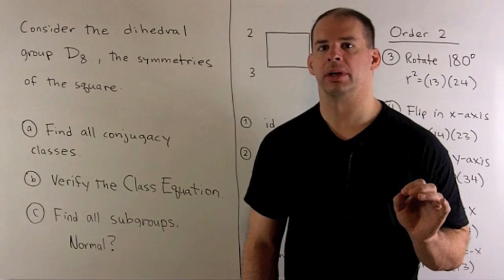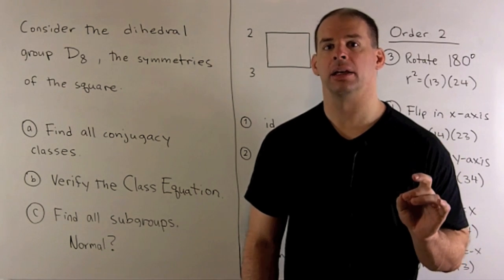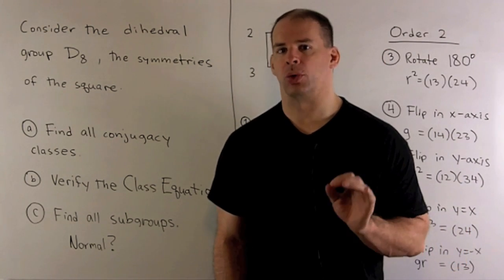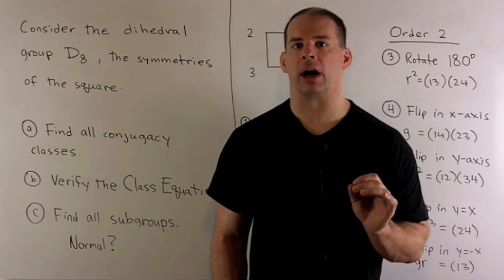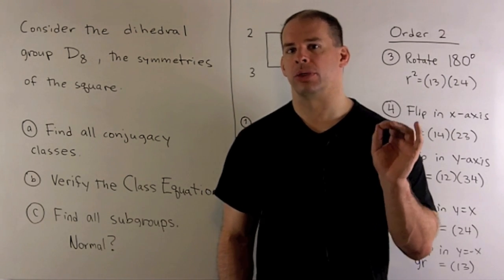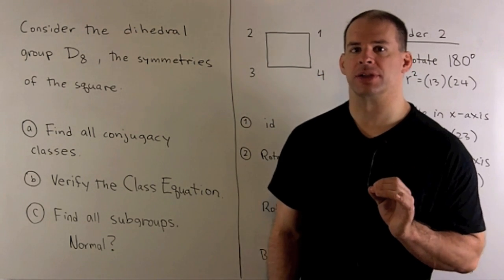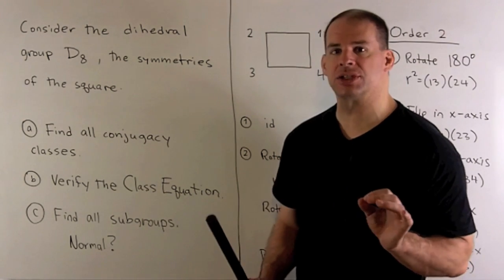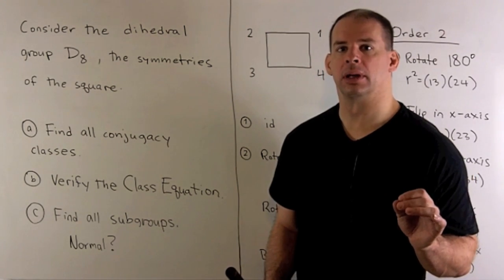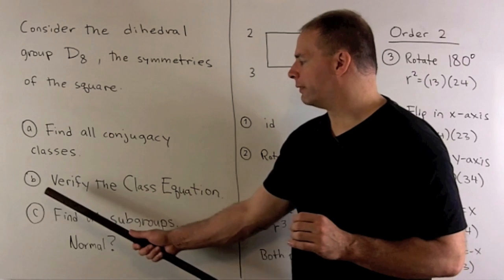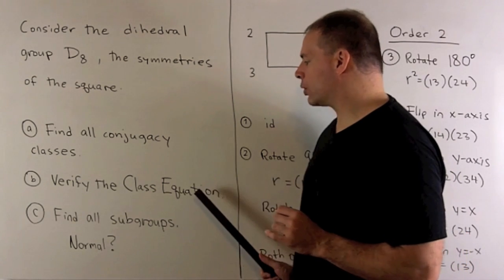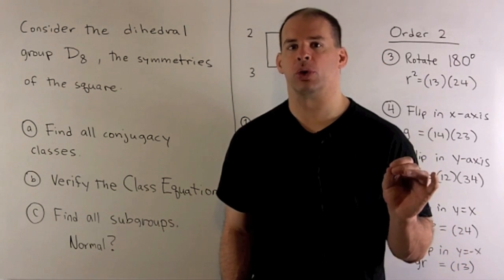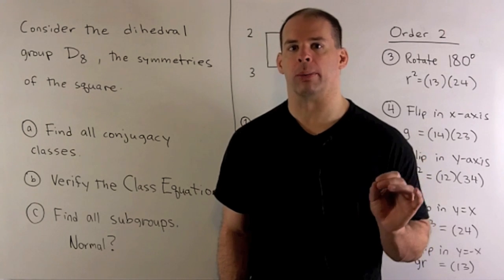Let's consider the dihedral group D8, sometimes written D4. This group is going to be the symmetries of the square. We have three questions: first, I want to find all conjugacy classes for our group. Then, we'll verify the class equation. Finally, I want to find all subgroups and determine which ones are normal.